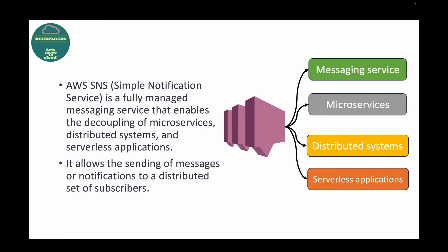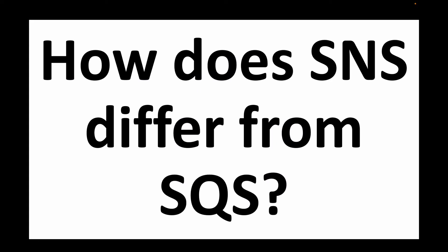SNS allows the sending of messages — it could be email notifications or notifications to a distributed set of subscribers. Subscribers are your end users who should be receiving the notification. We can use this service to send out email notifications or text notifications to multiple people.